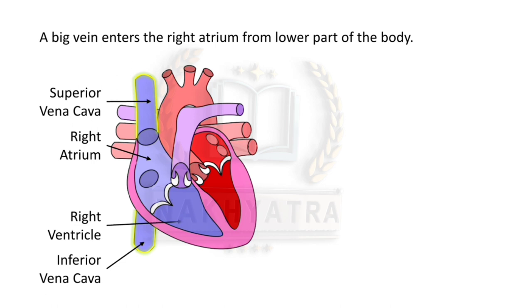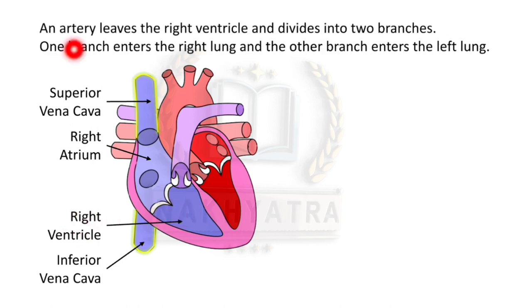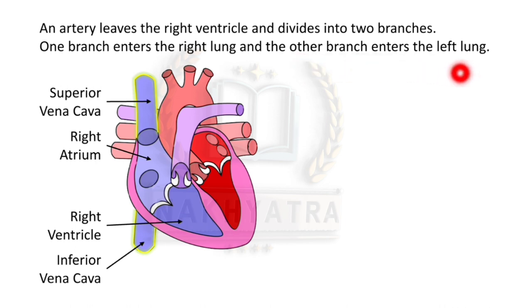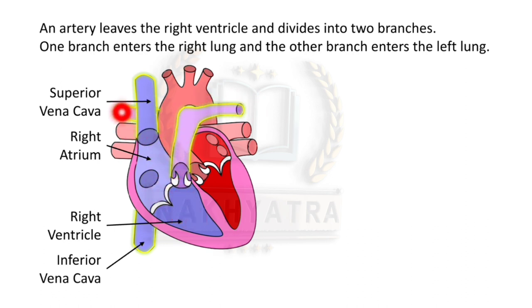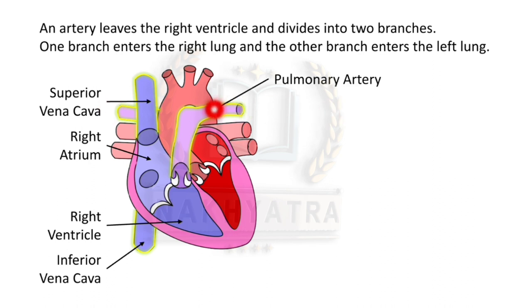An artery leaves the right ventricle and divides into two branches — one branch enters the right lung and the other branch enters the left lung. This artery is called the pulmonary artery.